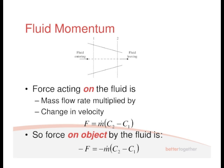And that's going to be the mass flow rate, so the mass flow rate of the fluid running through that pipe times by the change in velocity between 0.1 and 0.2, C2 minus C1.